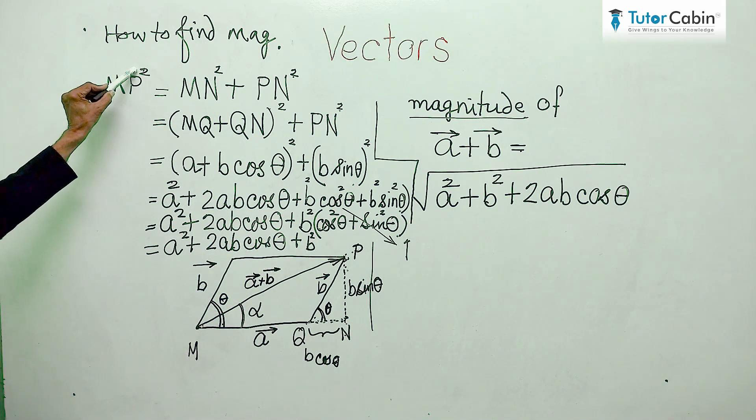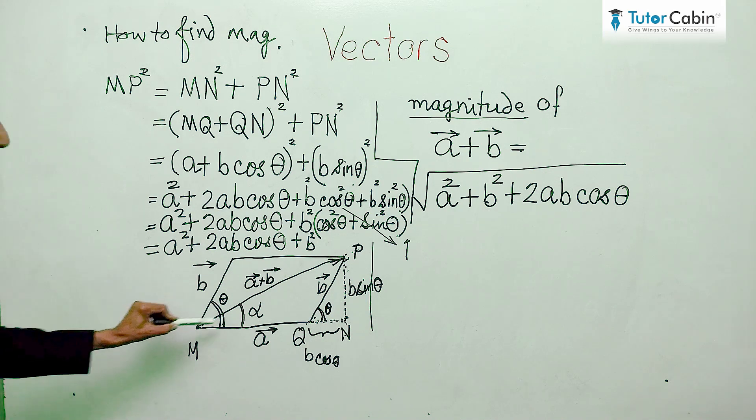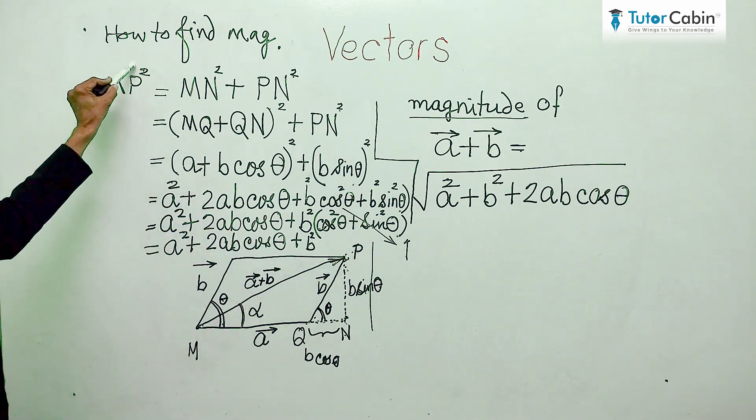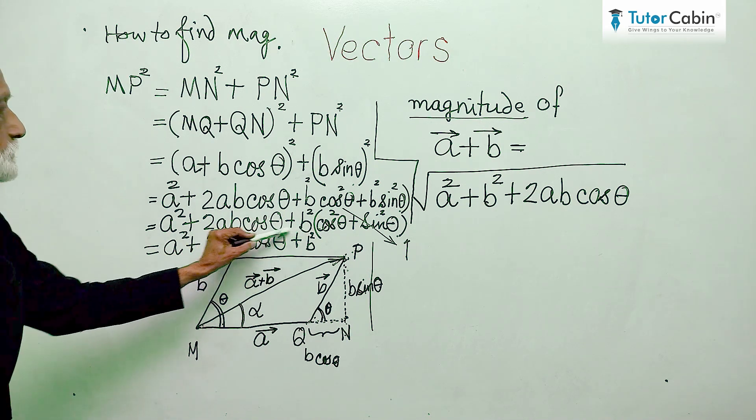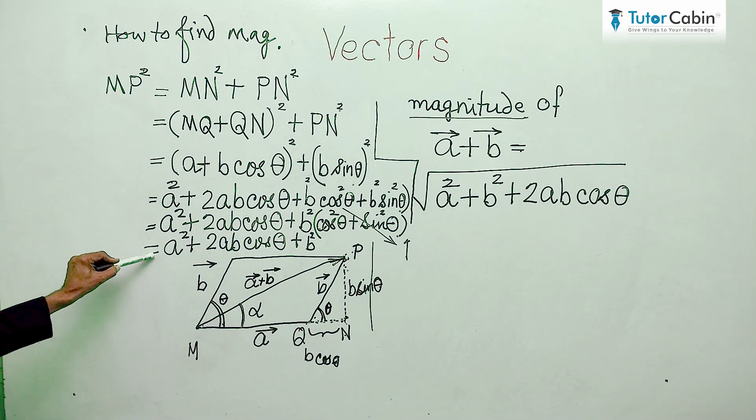Now, this is the square. This is the square of MP. So, we take under root here. So, similarly we take under root here also.